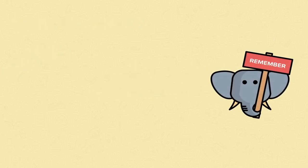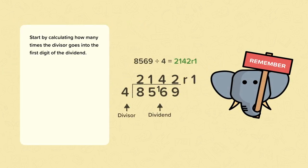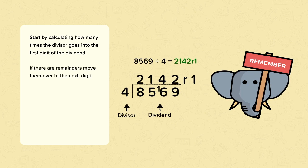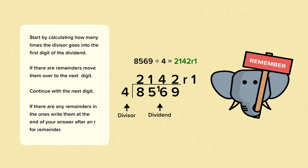So remember, start by calculating how many times the divisor goes into the first digit of the dividend. If there are remainders, move them over to the next digit and then continue with the next digit. If there are any remainders in the ones, write them at the end of your answer after an R for remainder.